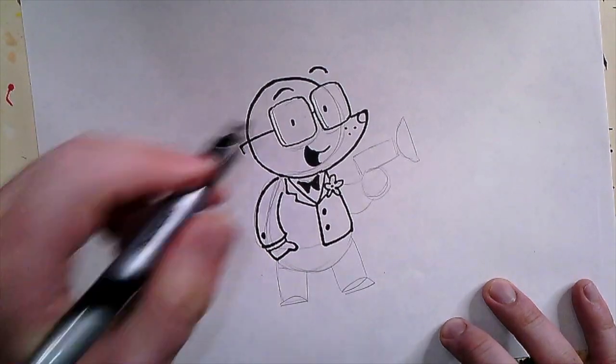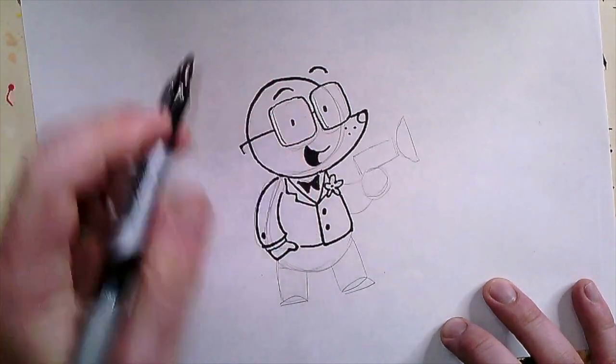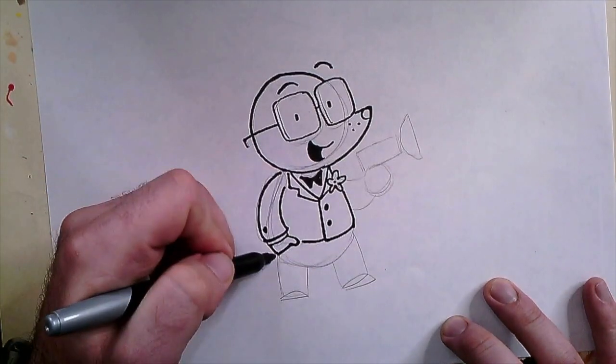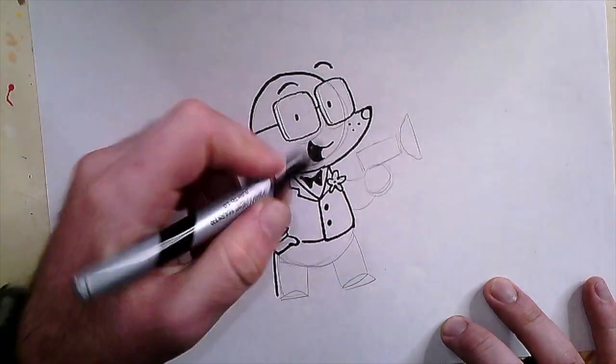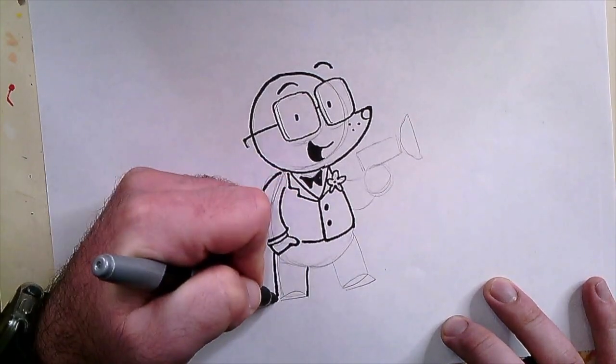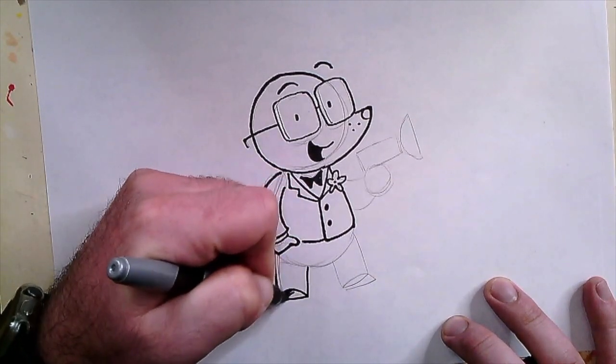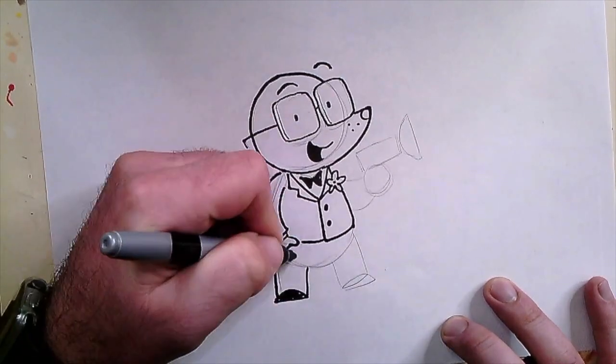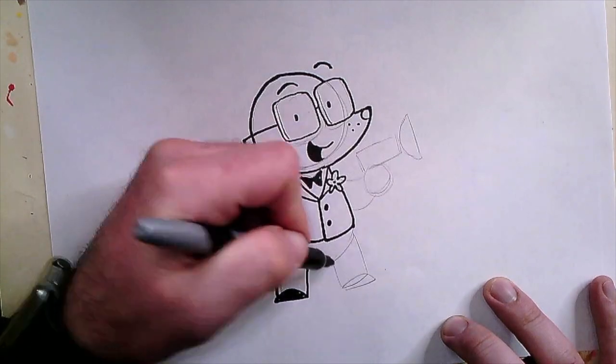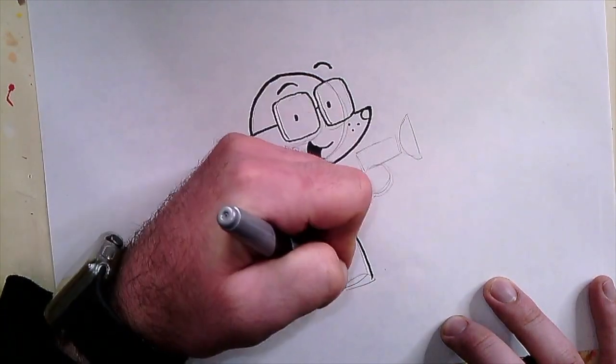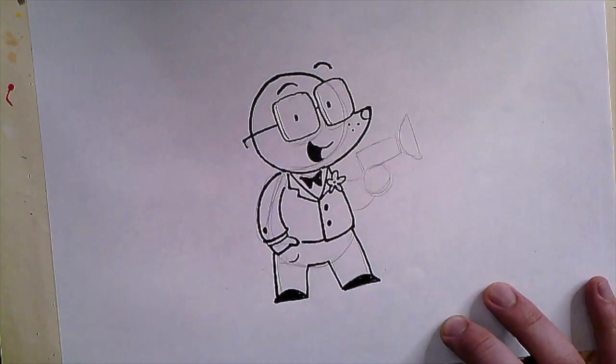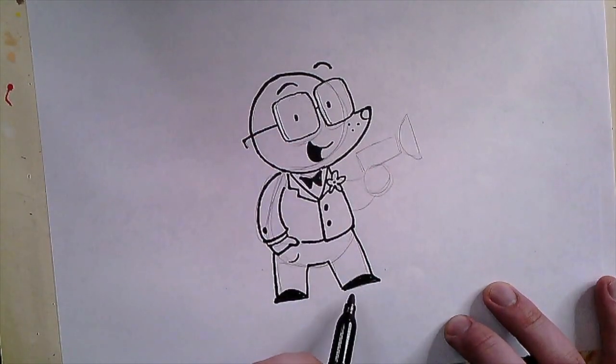Now we can draw this line across here too. Let's pop these pants on. We're going to have these pants coming out this way to show that the hands are going into a pocket. We can put that little semicircle shoe on. We can even put a little crease there where he's got his hand going into a pocket. Then we can have this leg over here and his other shoe over this side.